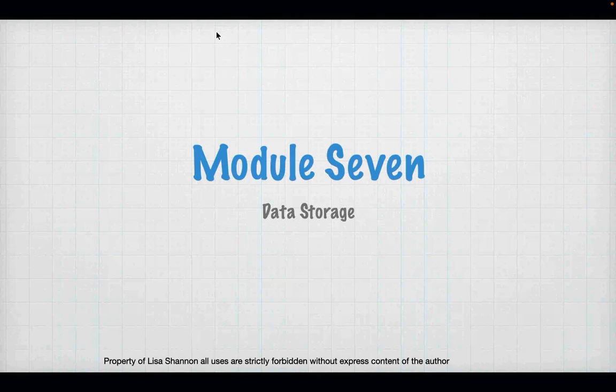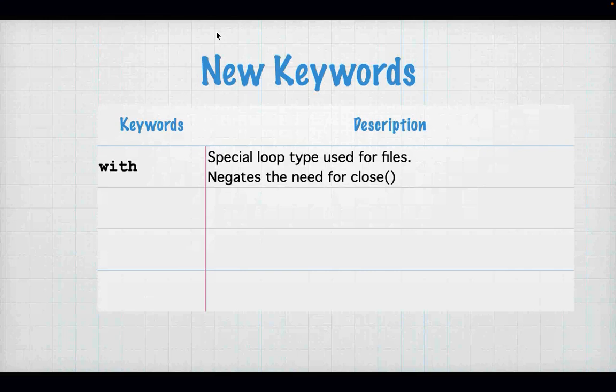What we have is the ability to read and write to the file system — data storage. Everything on these systems are files. Keynote is a file, every Python script we write is a file, and Microsoft Word is a file that is executed through Microsoft Word. So everything is a file, and what we need to do in this module is figure out how to read and write to files.